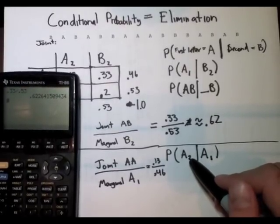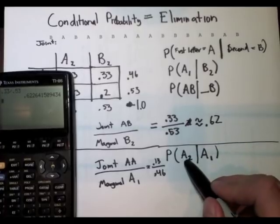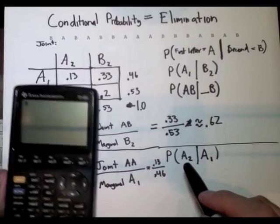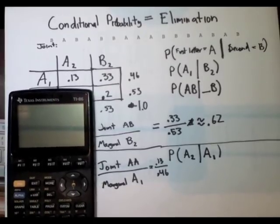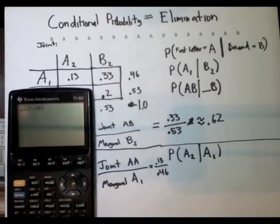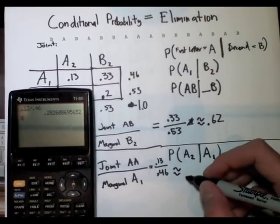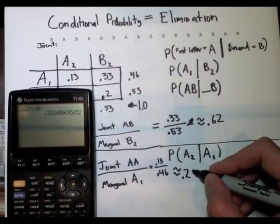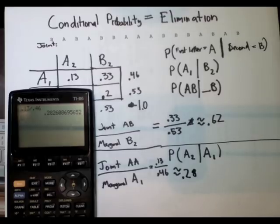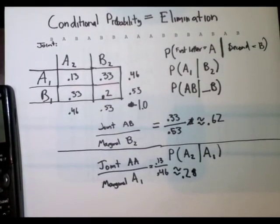Probability that we have AA given that we, or, the probability of the second letter being an A given that the first letter is an A. So that's going to be 0.13 divided by 0.46. And that equals approximately 0.28. Mm-hmm. Mm-hmm. So that's conditional probability.